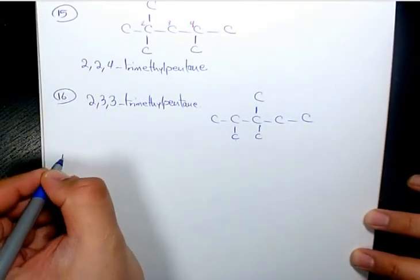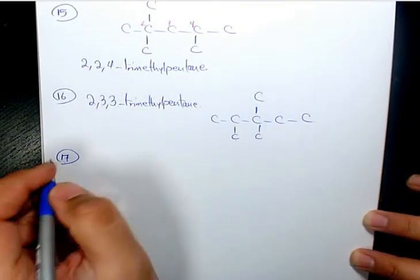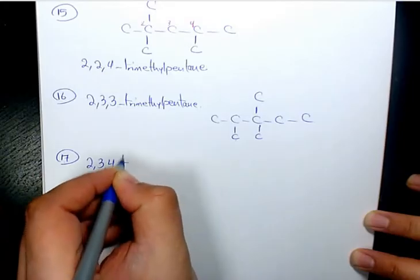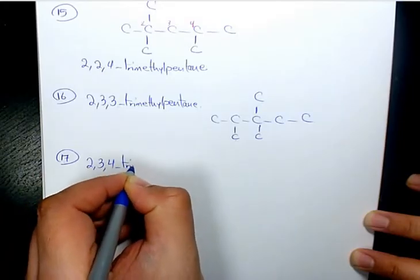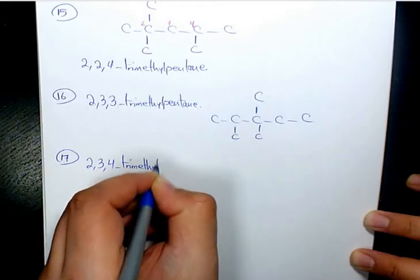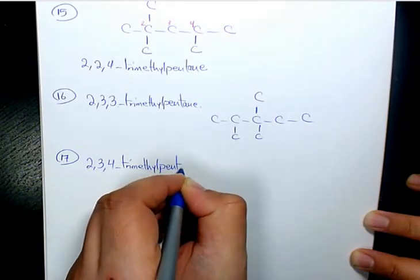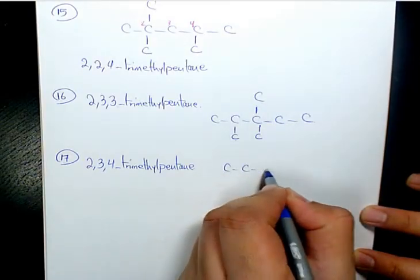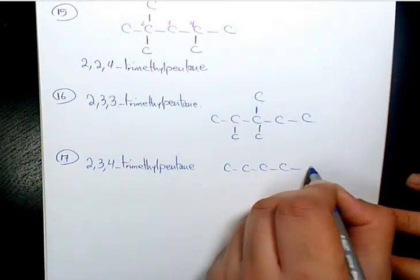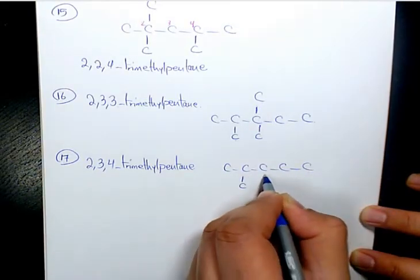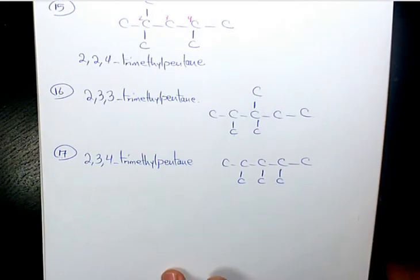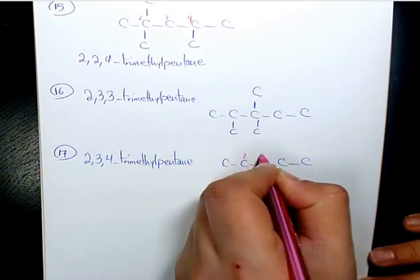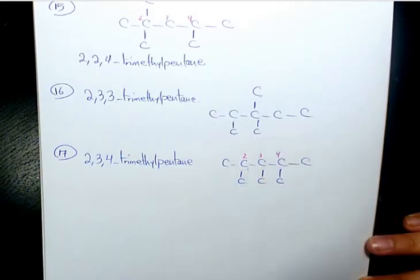Isomer number seventeen is going to be 2,3,4-trimethylpentane: 1, 2, 3, 4, 5 — we have three methyl groups on the second, third, and fourth carbon atoms.